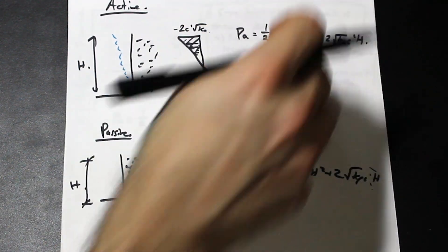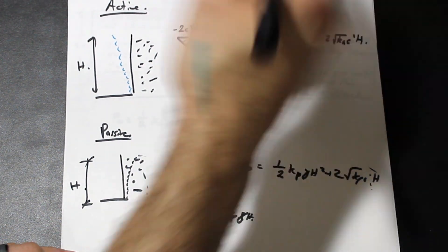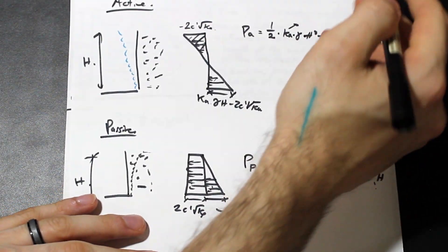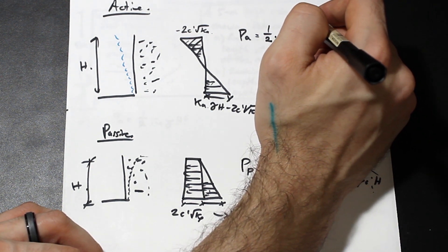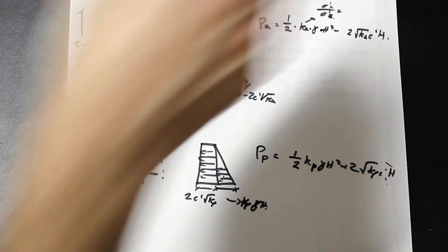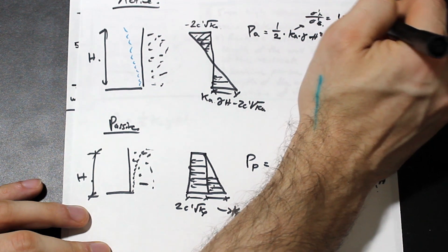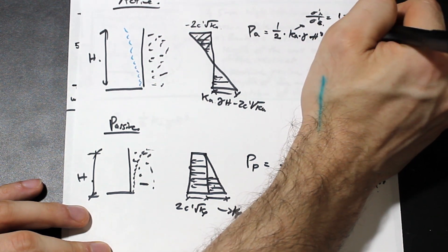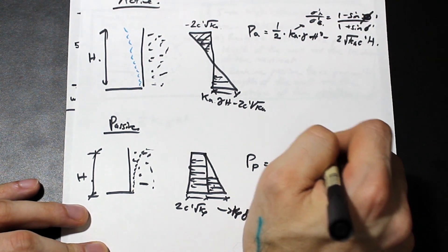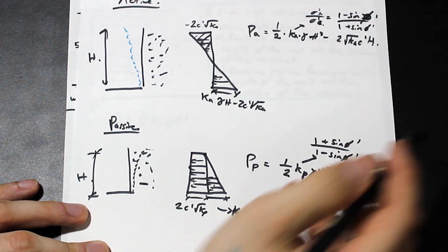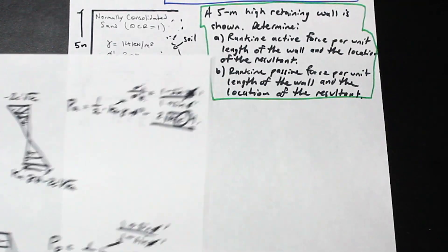Now, what do these terms mean? Ka is Rankine's earth pressure coefficient — the horizontal stress over the vertical stress. Ka is simply one minus sine phi prime, divided by one plus sine phi prime. Kp is just the flipped fraction. C prime is the cohesion value from the shear stress versus effective normal stress plot — it's the intercept of the Mohr-Coulomb failure criterion at the origin.